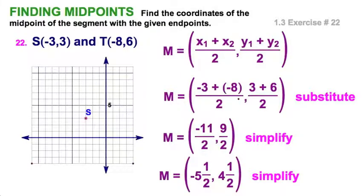And then I'm going to graph the coordinates of S: negative 3, and that's in this direction, and then up 3, so negative 3, 3.